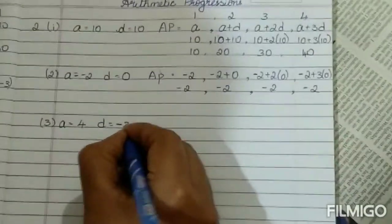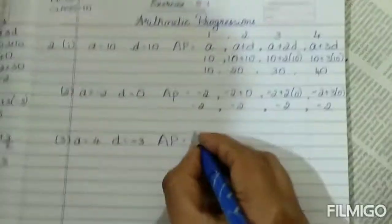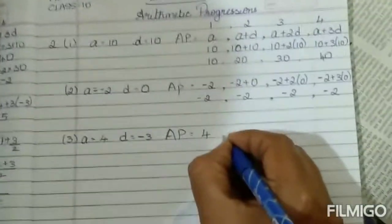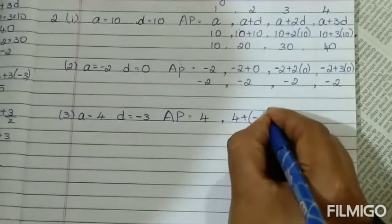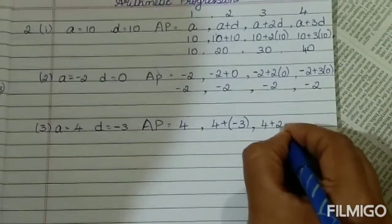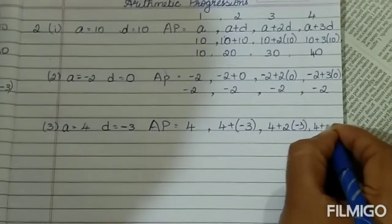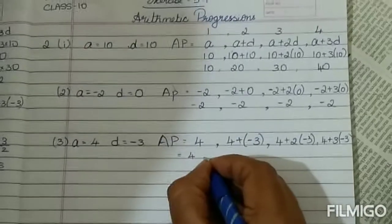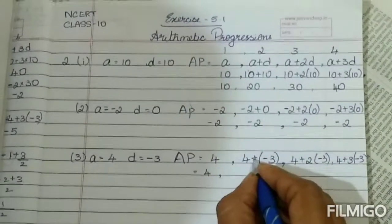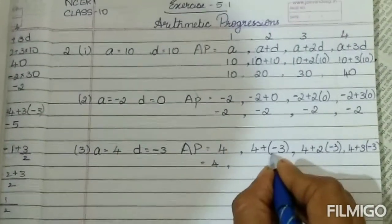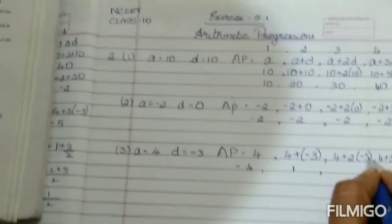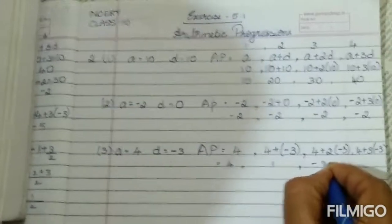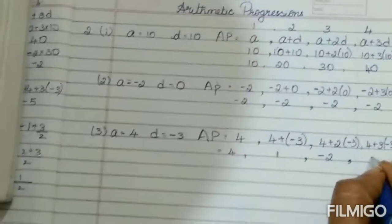Next, a equals 4 and common difference is minus 3. AP equals the same formula. You are going to replace the value of a, that is 4, 4 plus when there is negative minus sign you are going to give a bracket, next 4 plus 2 of minus 3, next 4 plus 3 of minus 3. 4 plus, plus into minus is minus, so minus 3. 4 minus 3 is 1. Plus into minus, 2 times 3 is 6, minus 6 plus 4 is minus 2. Plus into minus, 3 times 3 is minus 9, plus 4 is minus 5.